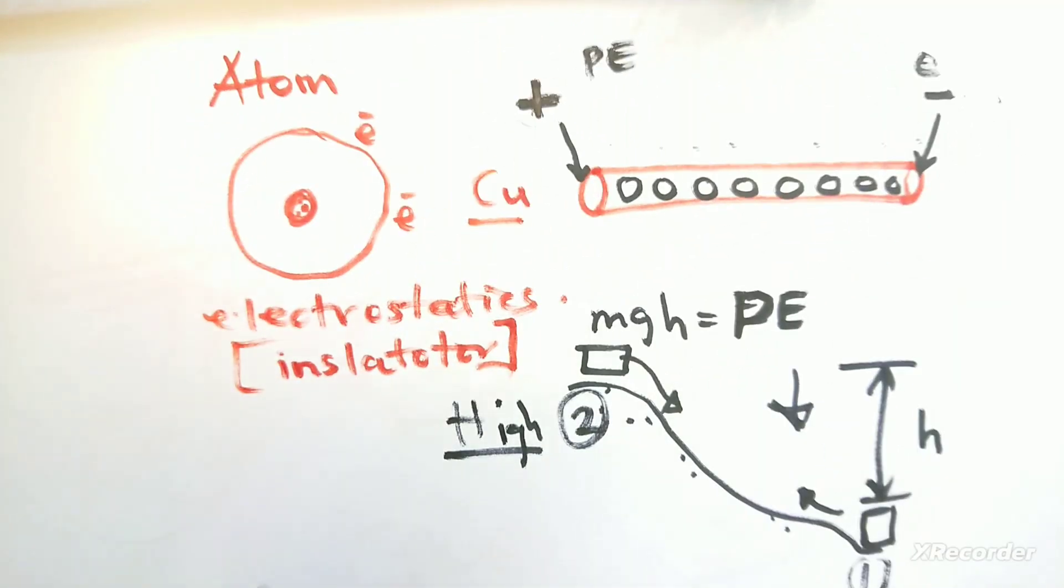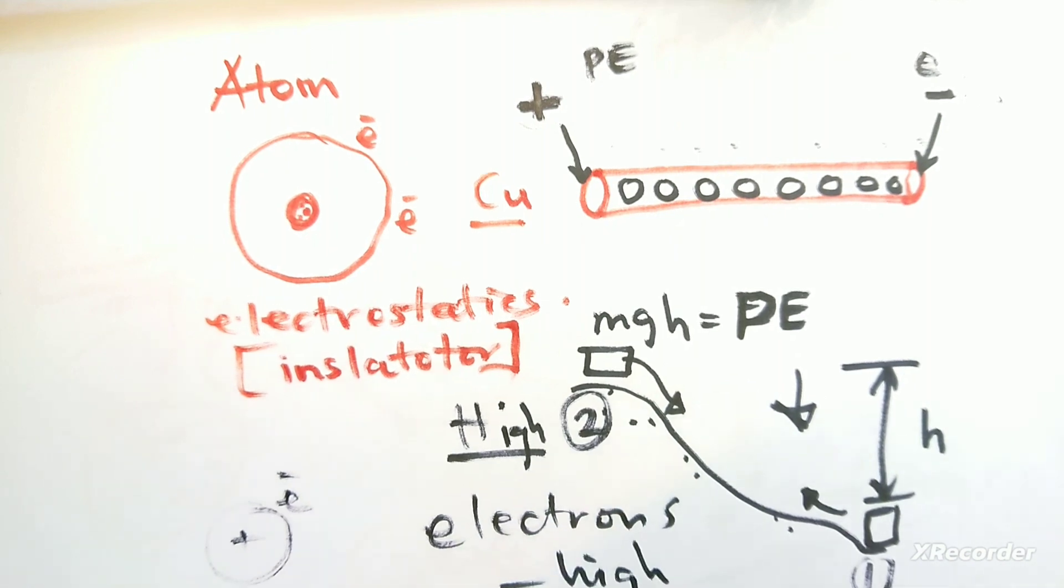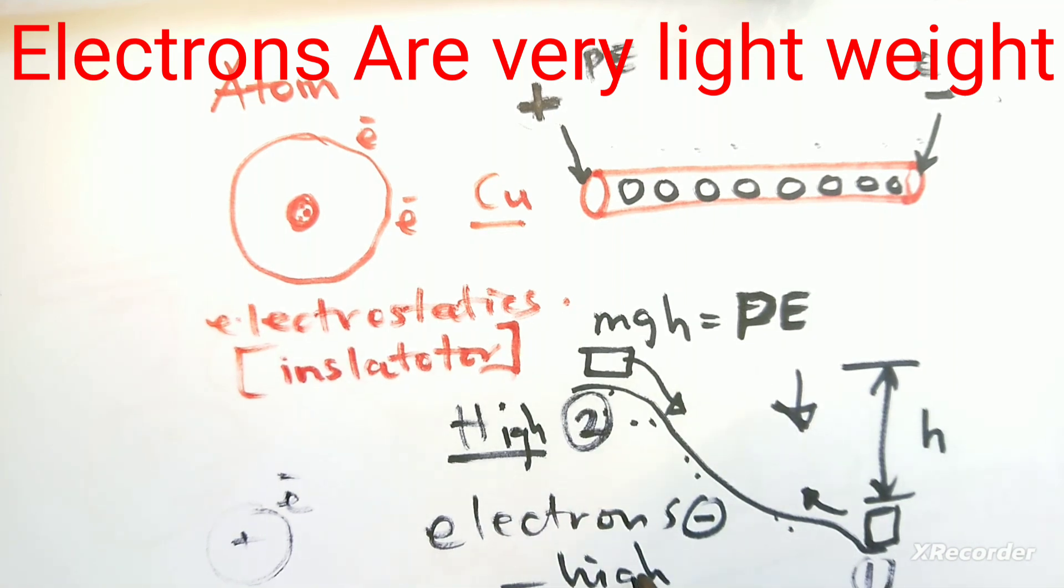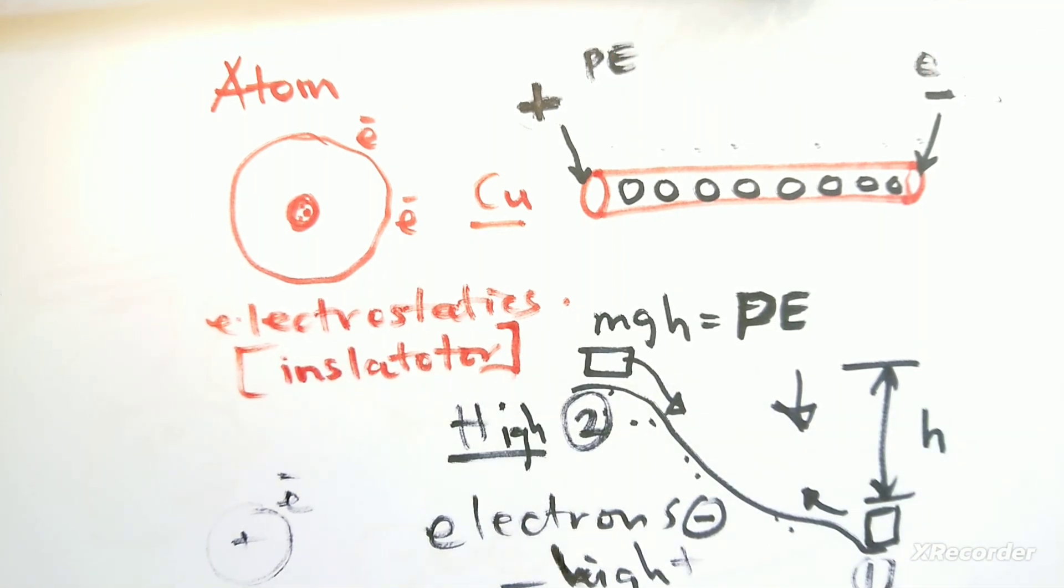You might notice that it's actually electrons that flow. That's because electrons are very light compared to protons. So a current is actually the flow of electrons.